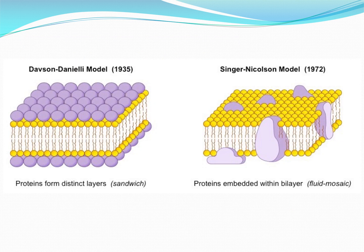Comparing the two models: 1935 was not a bad model for what was available. Davison and Danielli were right about the phospholipid bilayer — that really hasn't changed from the old to the new model. The biggest difference is the proteins. They don't totally cover the top or bottom; some are on the bottom only, some on the top only, but a great many go straight through the membrane, and that's going to help with their function.